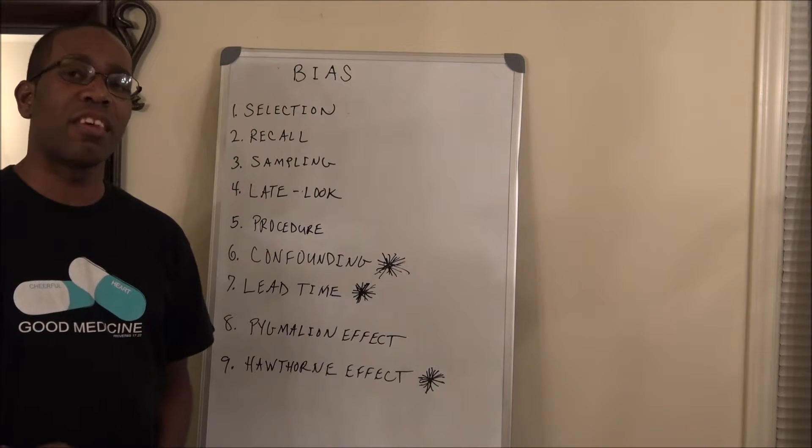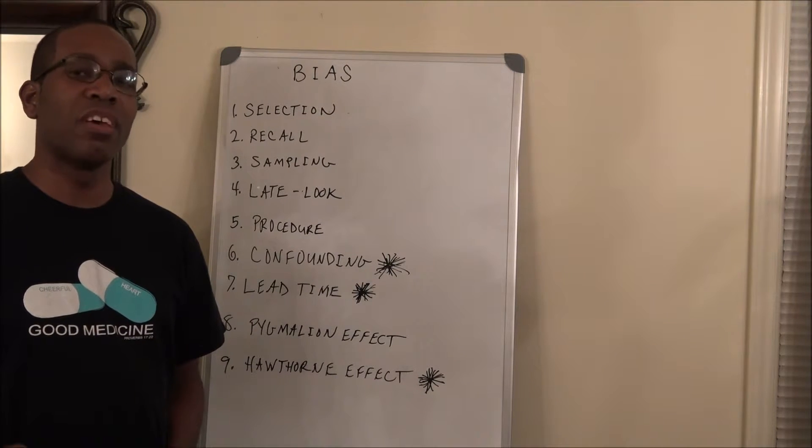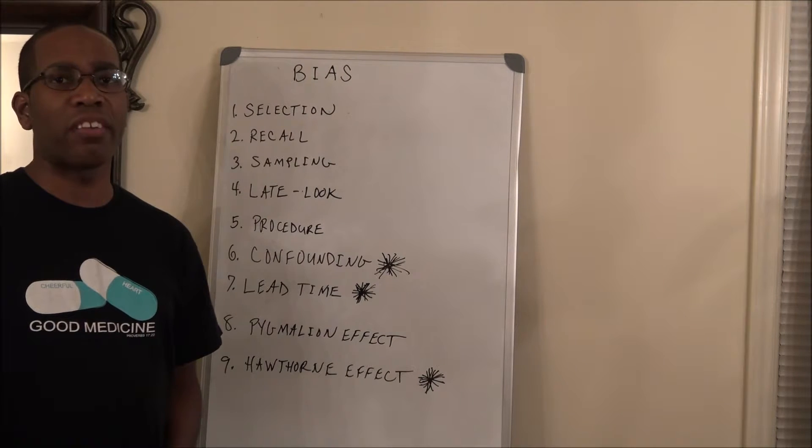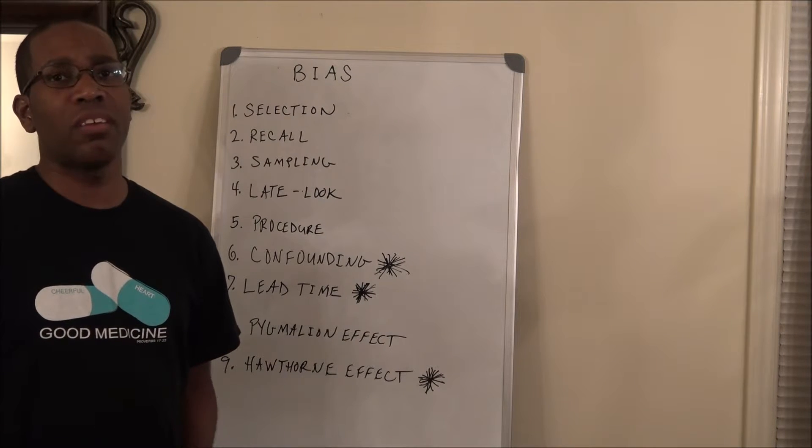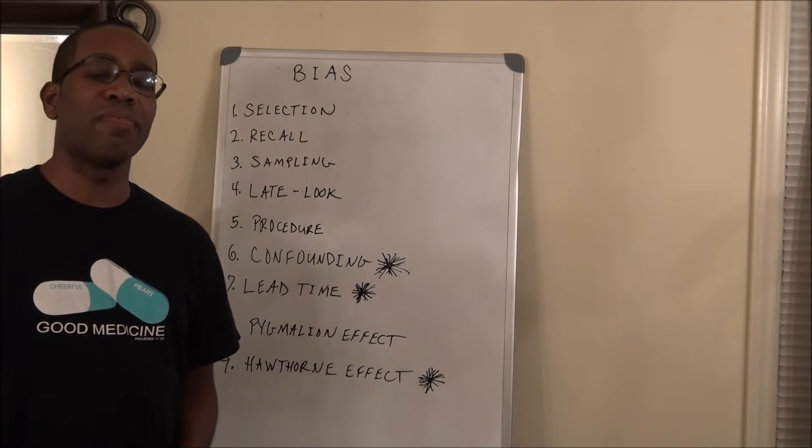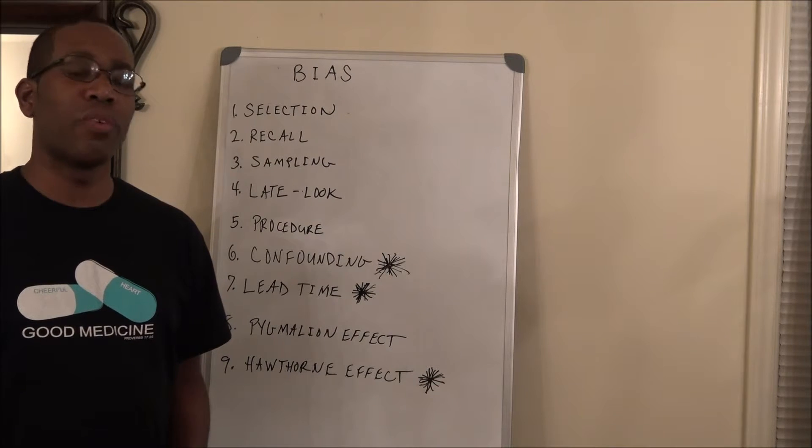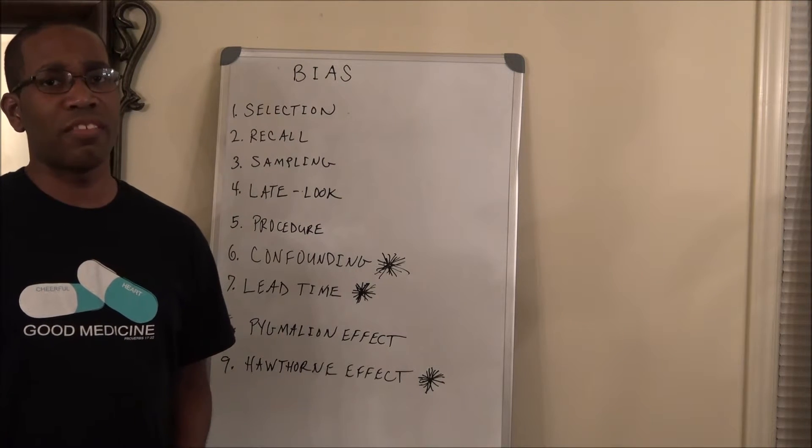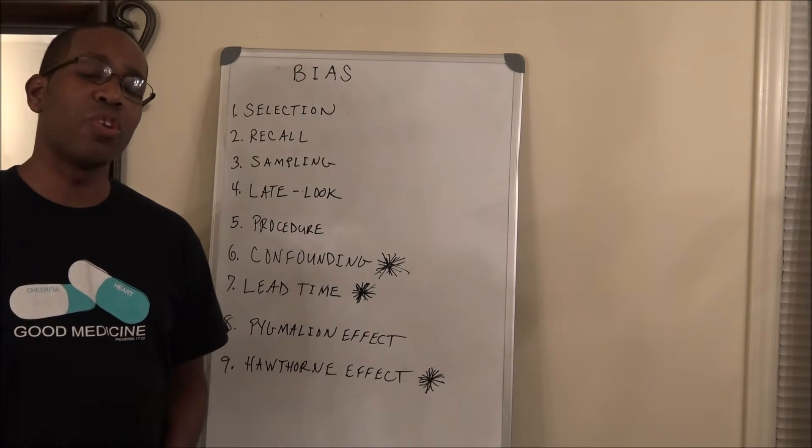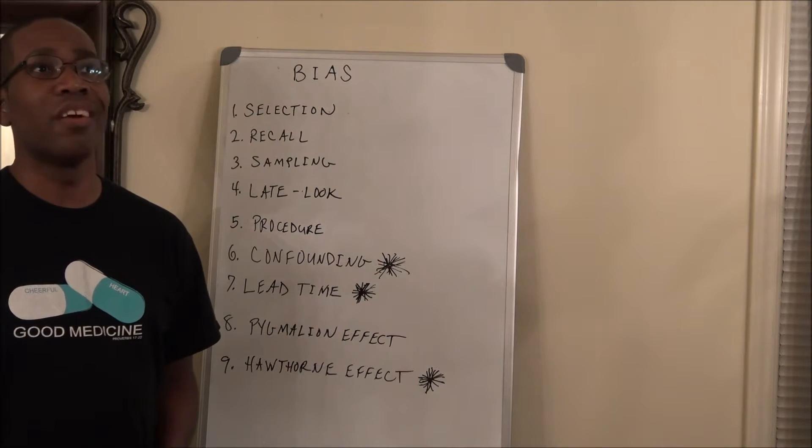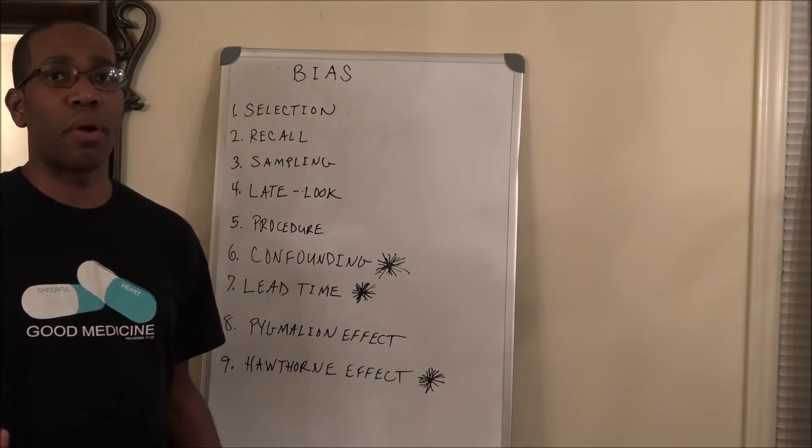The sixth type of bias is confounding bias. Confounding bias occurs when you have two closely related factors, and that unstudied factor is going to affect your results. For example, smoking and drinking are related. So if you have a study looking at the effects of alcohol on lung cancer, there may show a causation, when in reality, it's the smoking that is really the cause of the lung cancer. We need to be on the lookout for confounding bias when a closely related factor that was not studied is the actual cause of the connection.